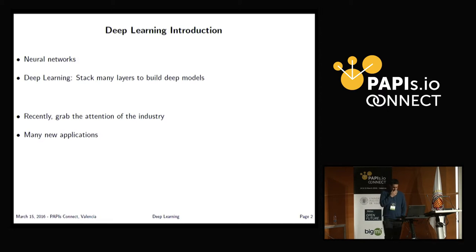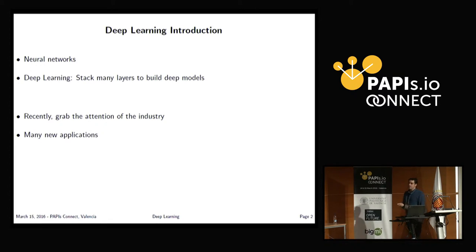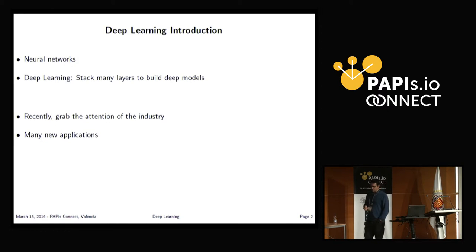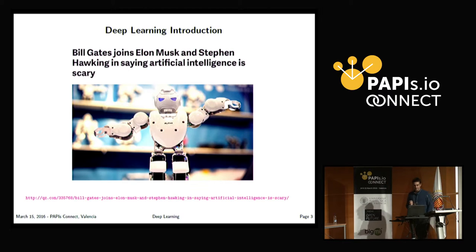Recently, deep learning has grabbed the attention of industry because it has many new applications: video transcription, image recognition, machine translation, and speech recognition are now moving to use deep learning techniques. This is the reason why some people make claims about artificial intelligence.